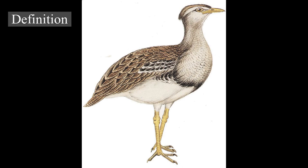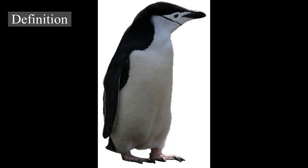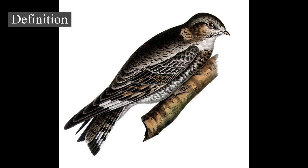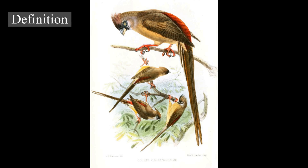Aves and a sister group, the order Crocodilia, contain the only living representatives of the reptile clade Archosauria. During the late 1990s, Aves was most commonly defined phylogenetically as all descendants of the most recent common ancestor of modern birds and Archaeopteryx lithographica. However, an earlier definition proposed by Jacques Gauthier gained wide currency in the 21st century and is used by many scientists, including adherents of the PhyloCode. Gauthier defined Aves to include only the crown group of the set of modern birds, excluding most groups known only from fossils and assigning them instead to the broader group Avialae.